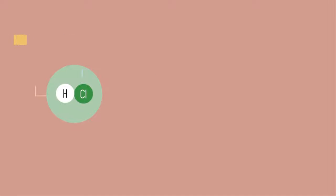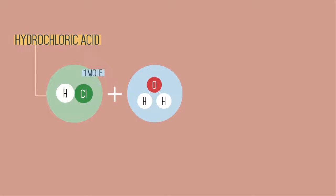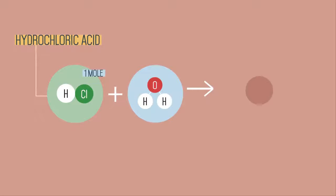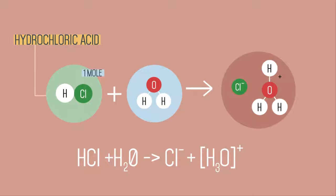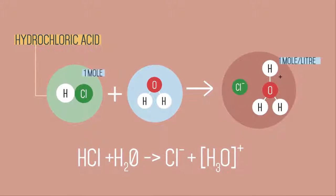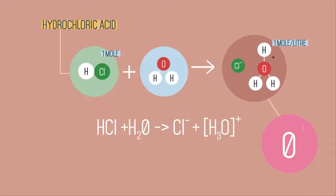If you dissolve 1 mole of a strong acid like HCl in water to make 1 litre of solution it dissociates completely into ions. So you also get 1 mole per litre of hydrogen ions and a pH of 0.